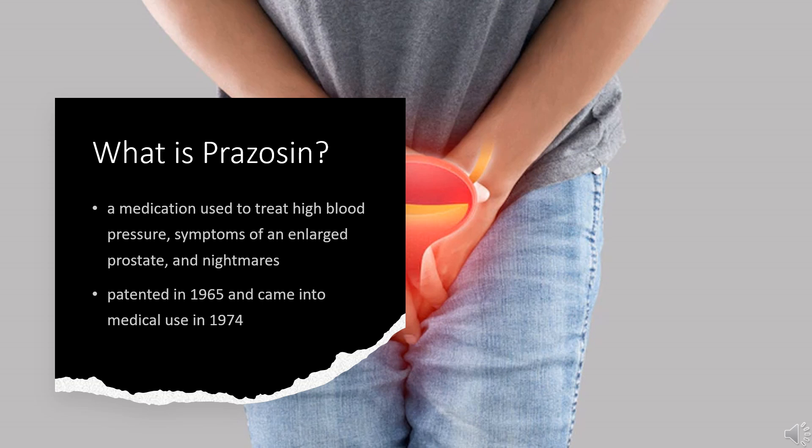Prazosin, sold under the brand name Minipress among others, is a medication used to treat high blood pressure, symptoms of an enlarged prostate, and nightmares related to post-traumatic stress disorder. It is an alpha blocker and a less preferred treatment of high blood pressure.